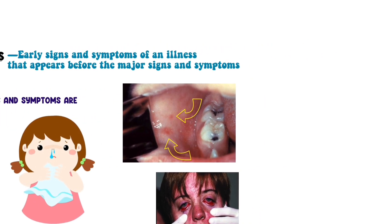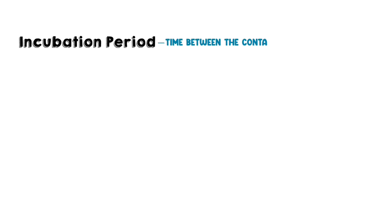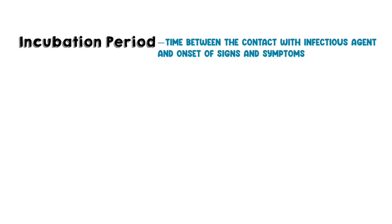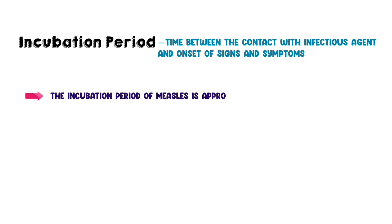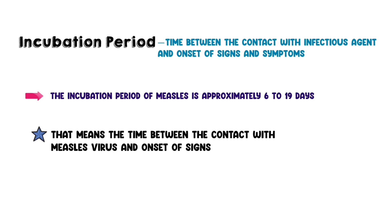The incubation period is the time between contact with an infectious agent and the onset of signs and symptoms. The incubation period of measles is approximately six to nineteen days — that means the time between contact with the measles virus and the onset of signs and symptoms is six to nineteen days.